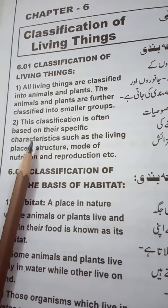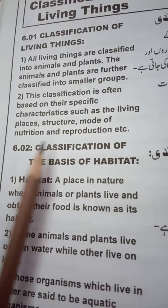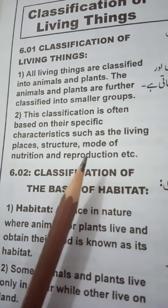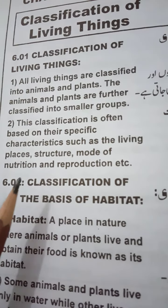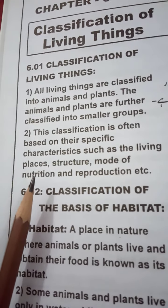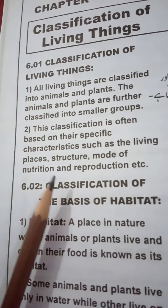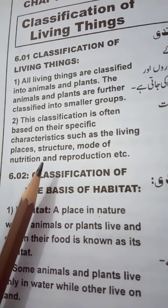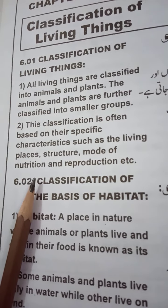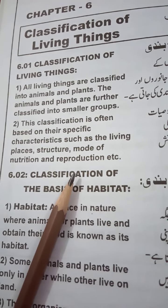This classification is often based on their specific characteristics such as the living places, structure, mode of nutrition and reproduction. Yeh dharja bandi unki khususi khususiyat ki bina par ki jati hai — jaise ke unka muskan kahan hai, unki saakht, unka gaza lene ka tariqa, aur unki reproduction kis tarah hoti hai, in sab ki bina par dharja bandi ki jati hai.